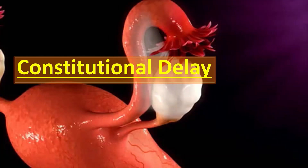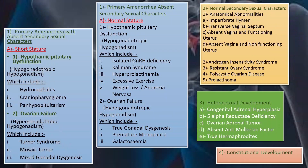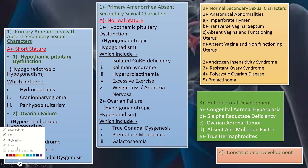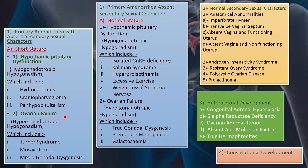This is the whole summary of all the causes of primary amenorrhea. We divide them into four main groups: absent secondary sexual characteristics (shown in the blue table), normal secondary sexual characteristics (yellow box), heterosexual development (green box), and constitutional development (orange box).